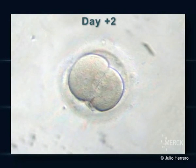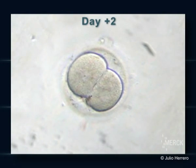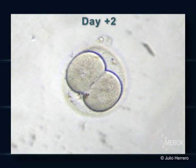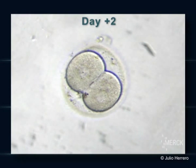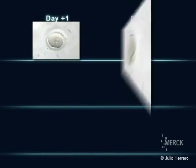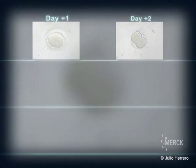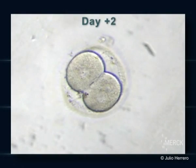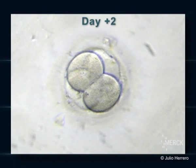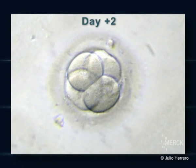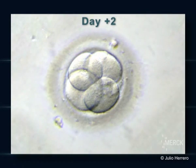Two days after puncture, the embryo divides itself and contains two cells with one nucleus per cell, which in turn starts to divide into an embryo of four cells if its development is optimal.